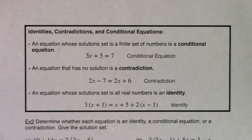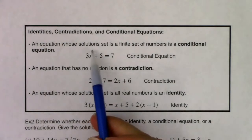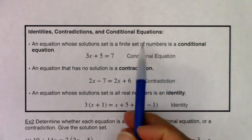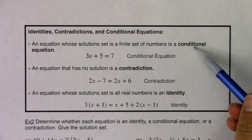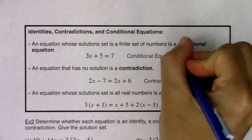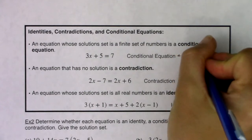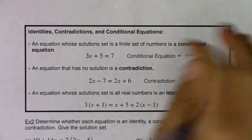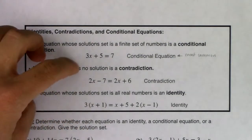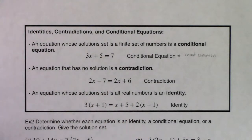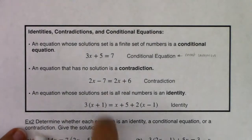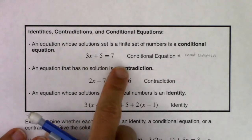Let's get to know identities, contradictions, and conditional equations. An equation whose solution set is a finite set of numbers is a conditional equation. Of these three types, this is the most common version of equations you've seen in your math careers. Here's an example: 3x + 5 = 7. We subtract 5 from both sides and divide by 3, getting x = 2/3. That one number is what we call a conditional equation.